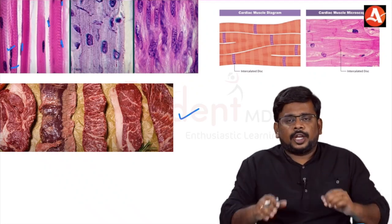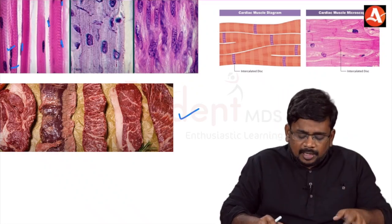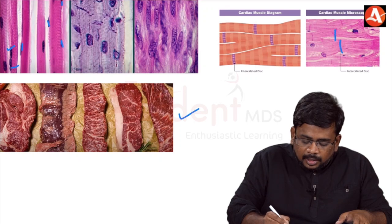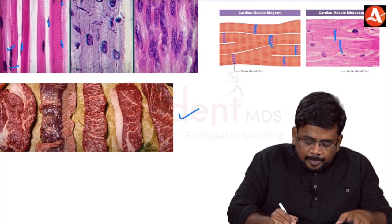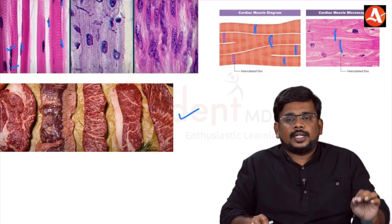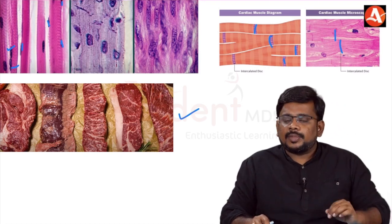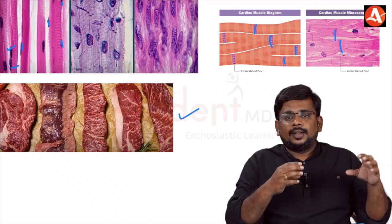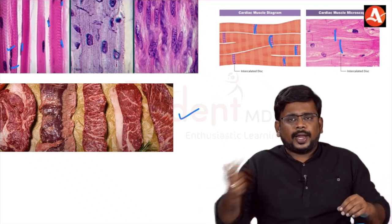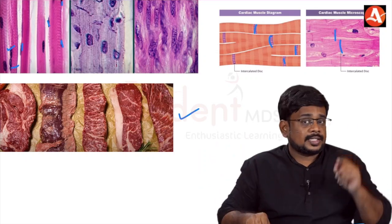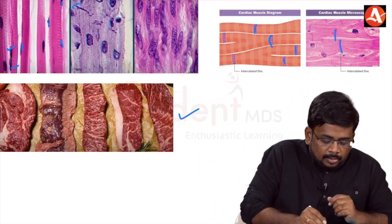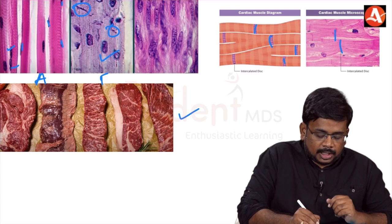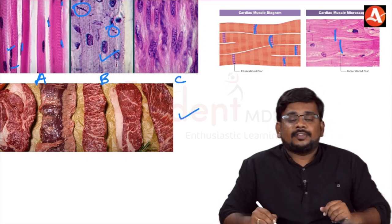To differentiate cardiac from smooth muscle: in a cardiac muscle histological diagram, you can see lines called intercalated discs, which transport signals from one cell to another without delay — present only in cardiac muscle. Smooth muscle has the nucleus in the center, not the periphery, and is unicellular. So: A is skeletal muscle, B is cardiac muscle, and C is smooth muscle.